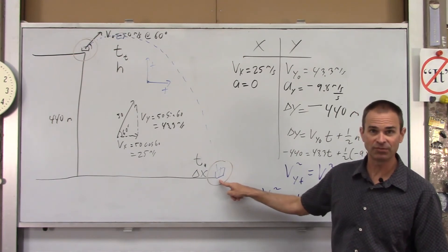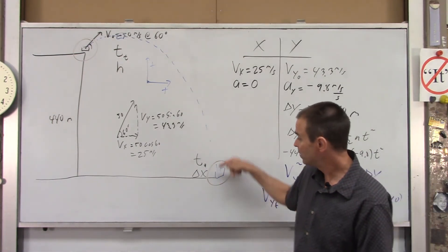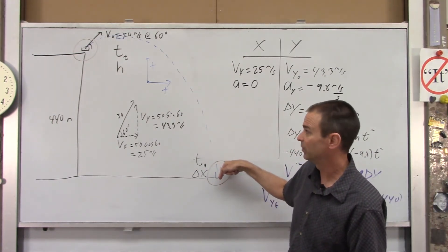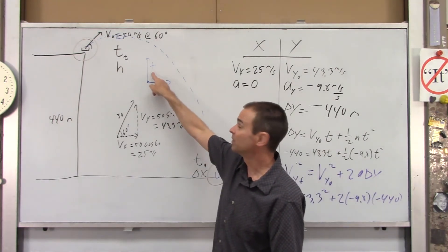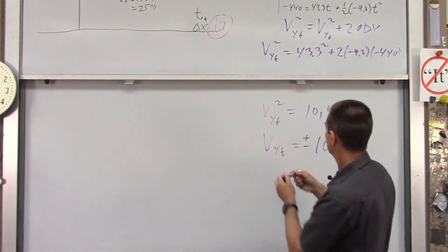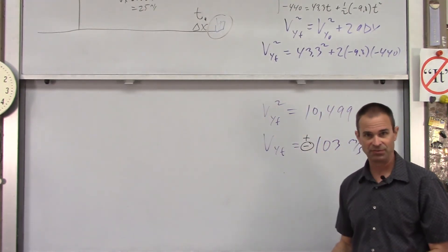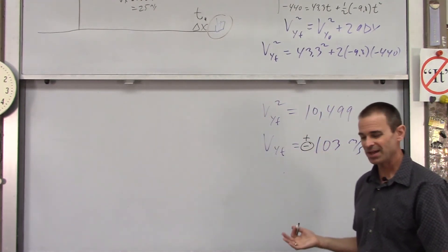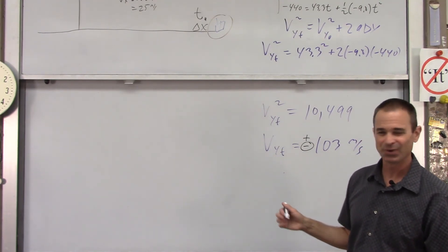Which one do you have to pick? The calculator ain't going to do it for us. Well, we know the book is traveling downward when it strikes the ground. Down is in the negative direction for our coordinate system. So, we have to pick the negative. If you don't do that, you're going to get a really crazy time.